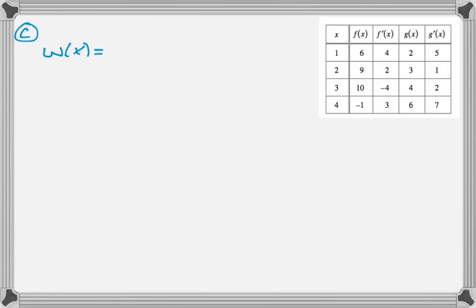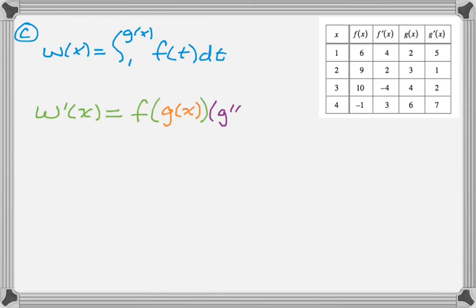Part c is a second fundamental theorem question. So, we're given this weird accumulation function, and we're asked to find the derivative at a certain value. So, w prime of x is going to be f evaluated at the upper bound times the derivative of the upper bound. Alright,